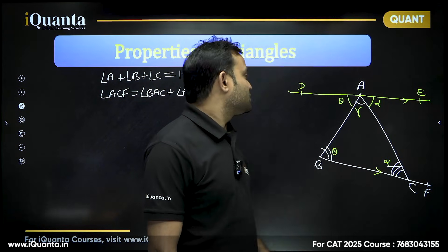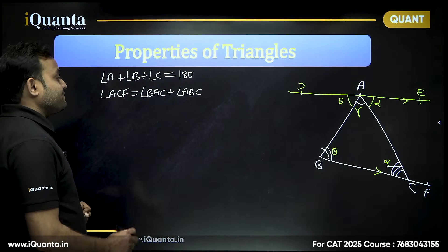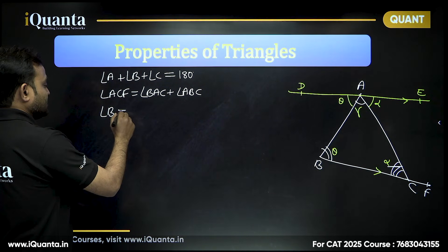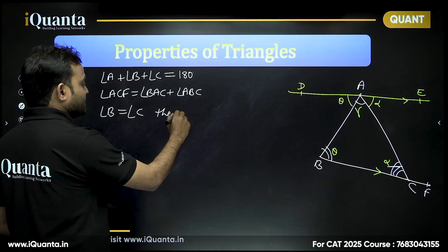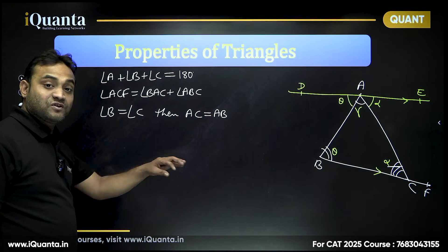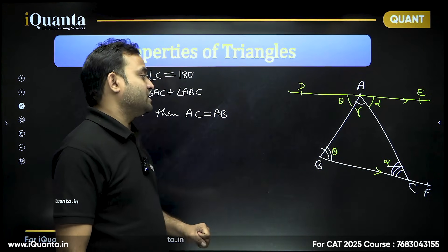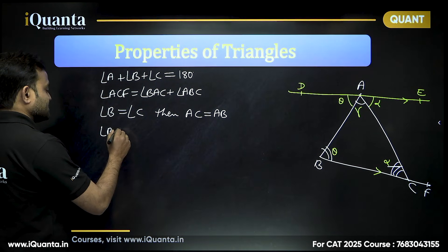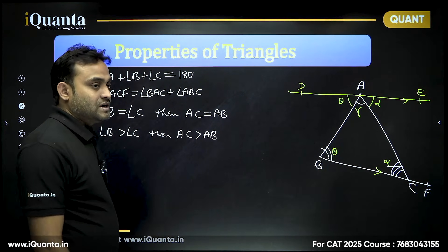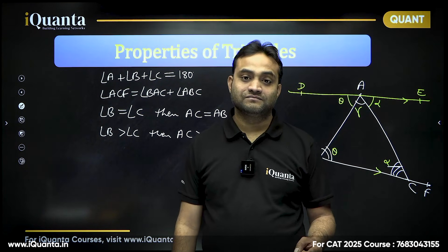Regarding the relation between angles and sides: if angle B equals angle C, then the corresponding opposite sides are equal, meaning AC equals AB. Vice versa is also true. If angle B is greater than angle C, then AC will be greater than AB — the side opposite the larger angle is longer.